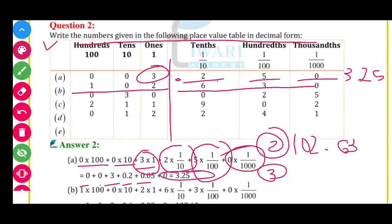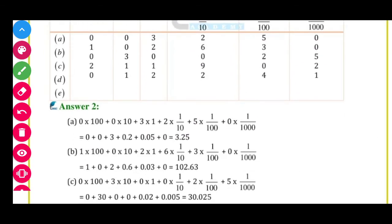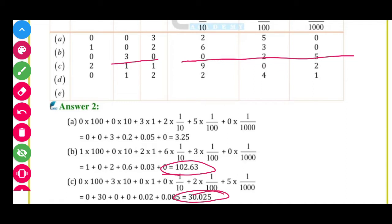Then C ka answer hoga 30.025. Kaise answer aa raha hai: ones ke aage point hota hai aur 10, jo point ke peeche hote hain. So second mein 102.630 — ye aap directly bhi likh sakte hain. Then third one mein 30.025. Expanded form na likho to bhi chalta hai.